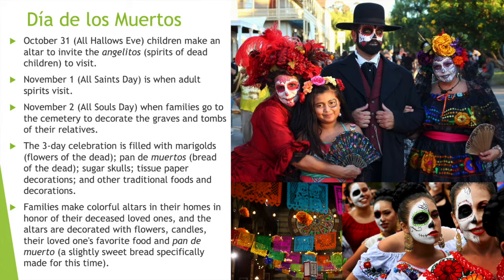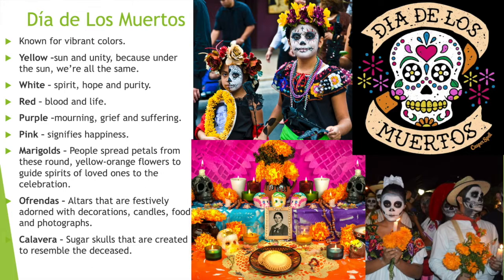These altars are decorated with flowers, candles, maybe a loved one's favorite foods, and pan de muerto — a slightly sweet bread made this time of year. Día de los Muertos is known for vibrant colors: yellow represents the sun and unity, white represents spirit, hope, and purity, red is blood and life, purple is mourning and grief, pink signifies happiness. Marigold petals are spread around to guide the spirits of loved ones to the celebration — you probably saw a lot of marigold petals in the movie Coco.